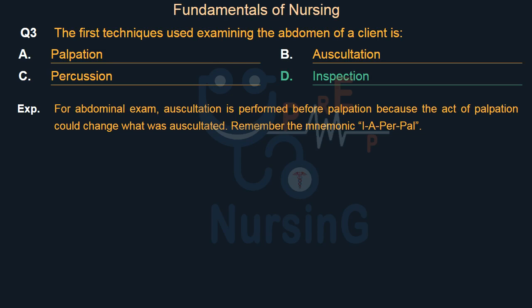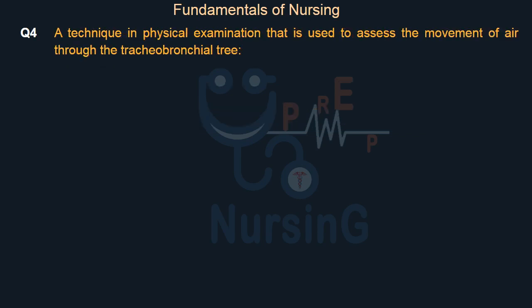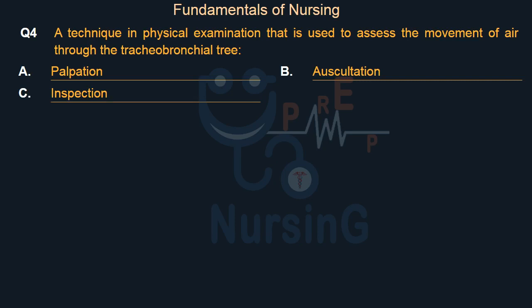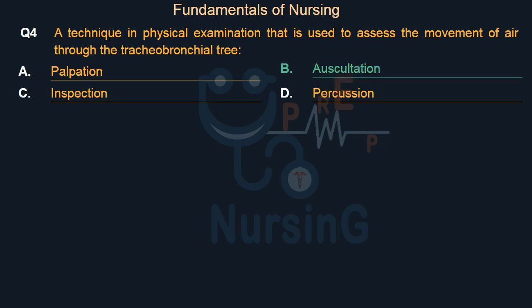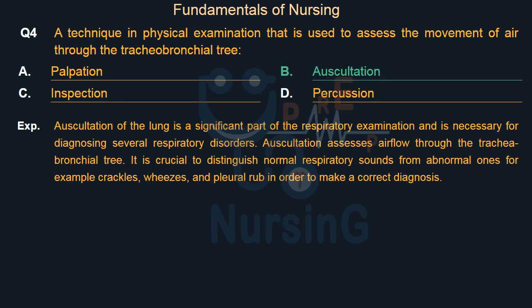A technique in physical examination that is used to assess the movement of air through the tracheobronchial tree: Option A — Palpation. Option B — Auscultation. Option C — Inspection. Option D — Percussion. Right answer is Option B: Auscultation. Auscultation of the lung is a significant part of the respiratory examination and is necessary for diagnosing several respiratory disorders. Auscultation assesses air flow through the tracheobronchial tree. It is crucial to distinguish normal respiratory sounds from abnormal ones — for example, crackles, wheezes, and pleural rub — in order to make a correct diagnosis.